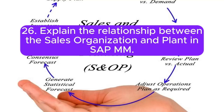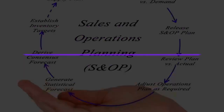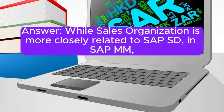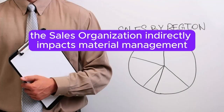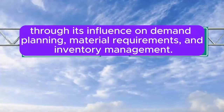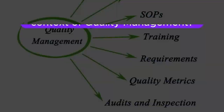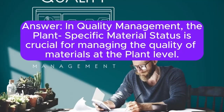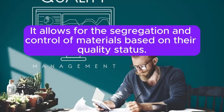Question 26: Explain the relationship between the sales organization and plant in SAP MM. While sales organization is more closely related to SAP SD, in SAP MM the sales organization indirectly impacts material management through its influence on demand planning, material requirements, and inventory management. Question 27: What is the significance of the plant-specific material status in the context of quality management? In quality management, the plant-specific material status is crucial for managing the quality of materials at the plant level. It allows for the segregation and control of materials based on their quality status.